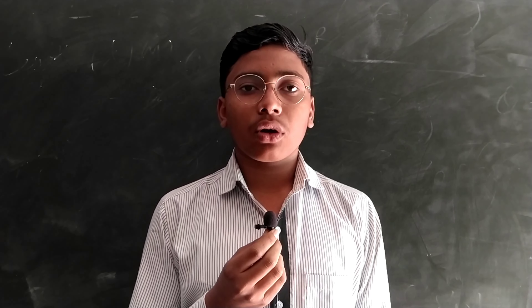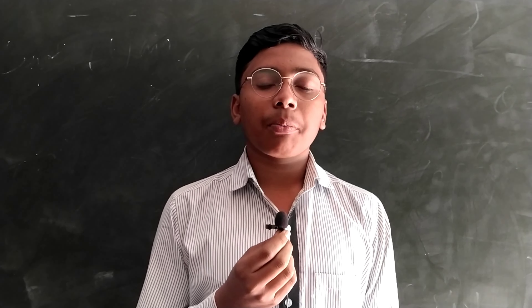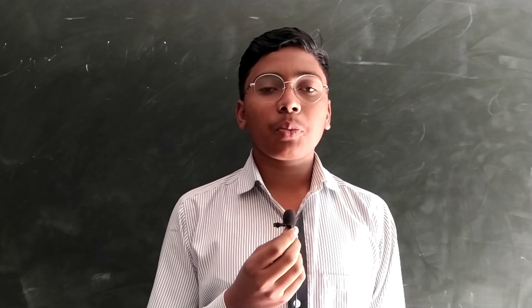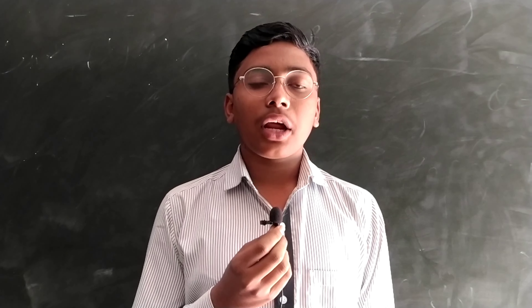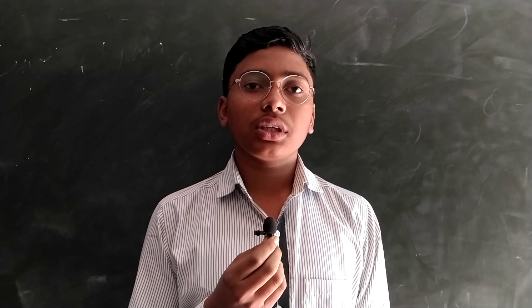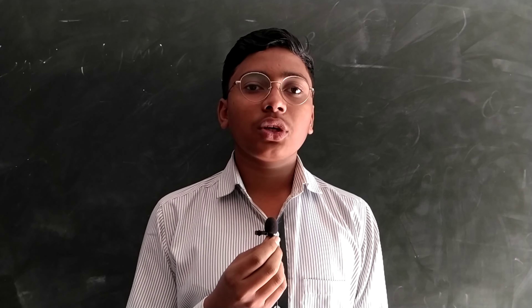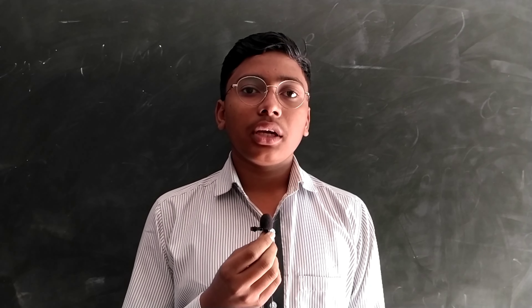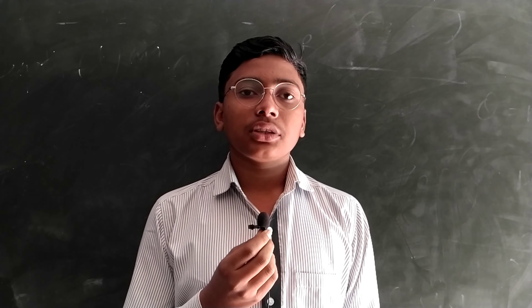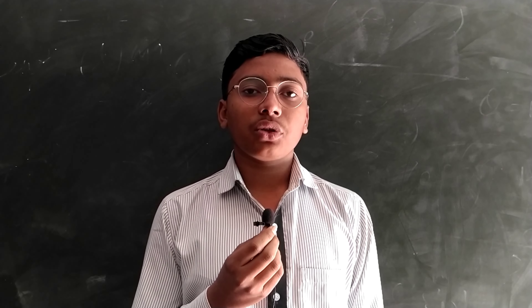What is an organic compound? The compounds which are made up of mainly carbon, nitrogen, hydrogen, oxygen, etc., with a covalent bond. It has two types: saturated and unsaturated.